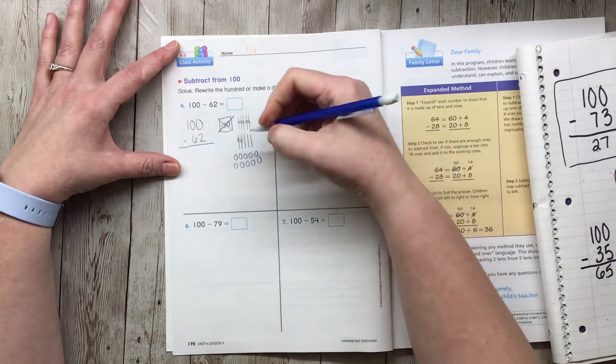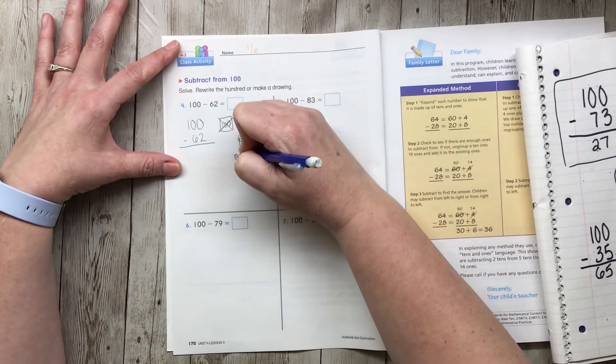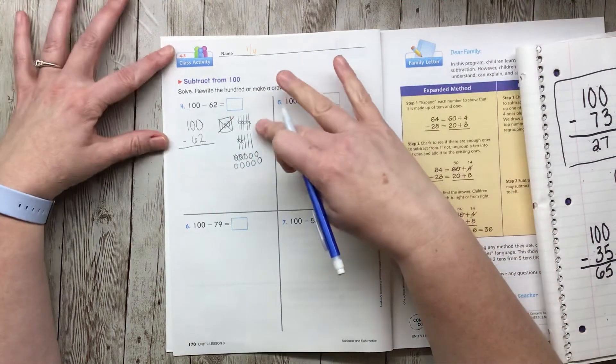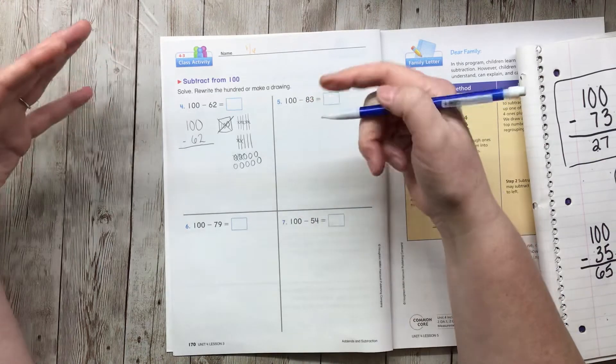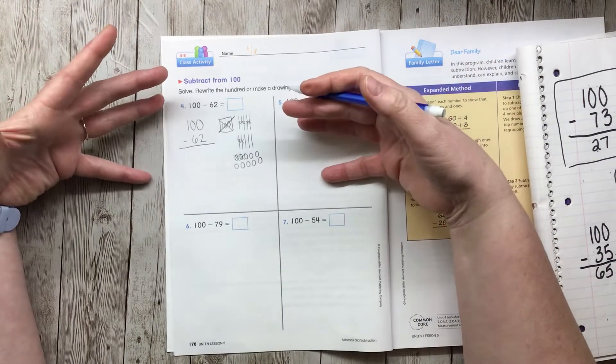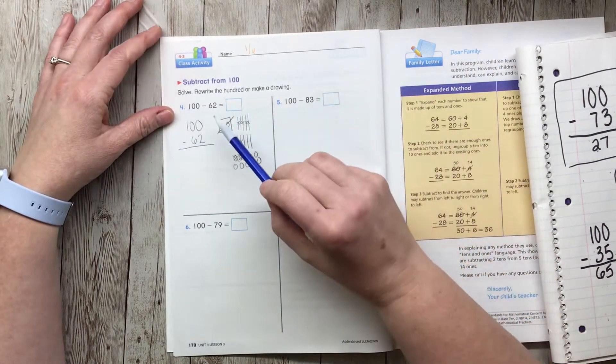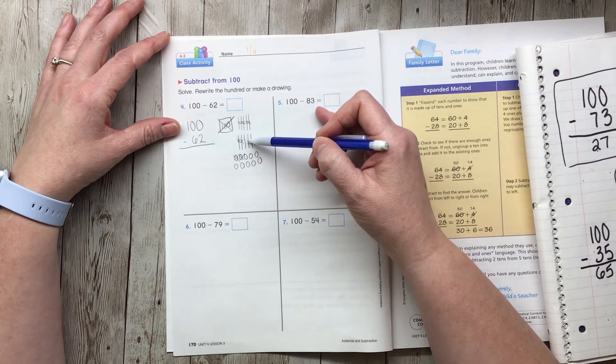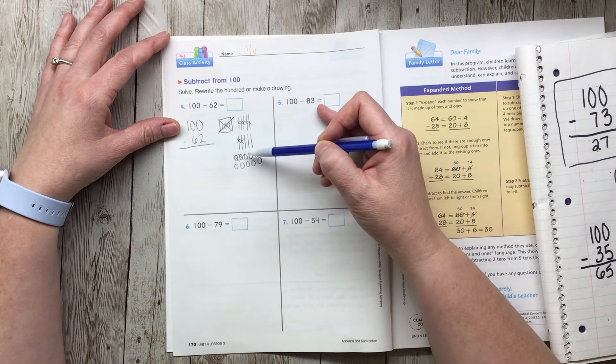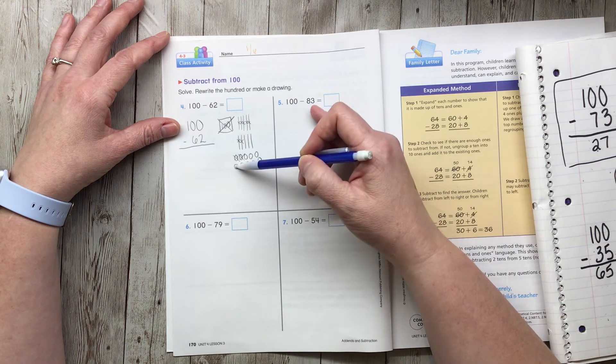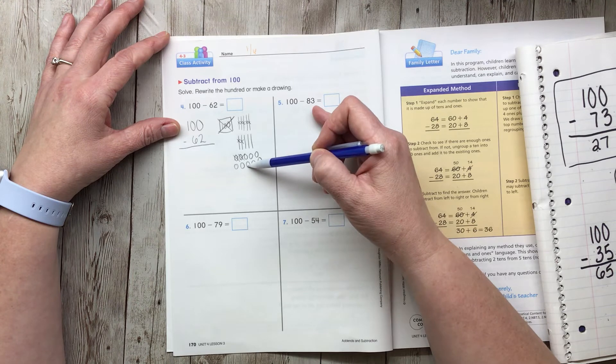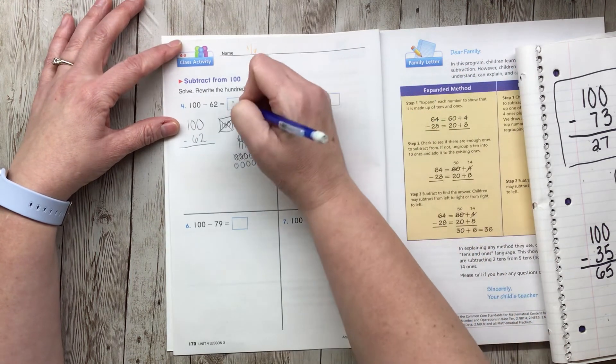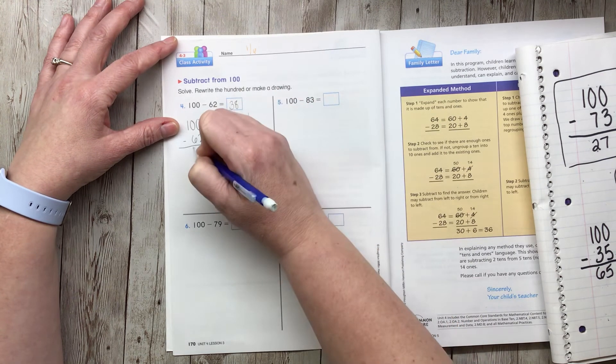All right, and now I can X out my two ones. After I've done all that math, all those drawings, it's time for me to count up my 10s and 1s that are left so I can figure out what the answer is. 10, 20, 30, 31, 32, 33, 34, 35, 36, 37, 38. So 100 minus 62 is 38.